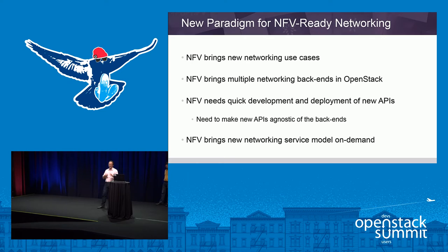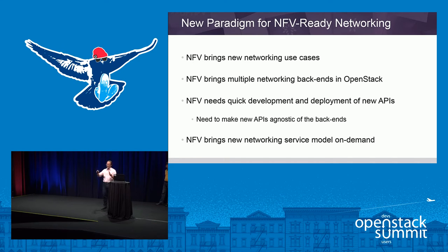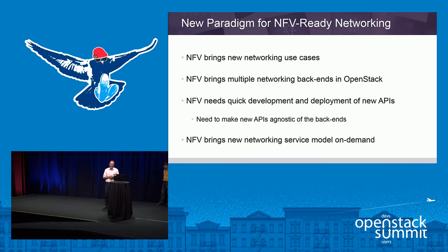As we've gone along and tried to increase the number of use cases and the creative ways that we're doing networking, it's starting to show some issues. One of the issues is around getting to a standard API — there's a tension between having a simple API that defines networking versus one that is extensible enough that if I made a new service tomorrow, the networking API would change. That's really not what is intended by the networking design in OpenStack today.